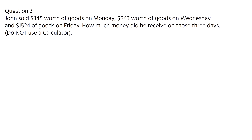Question 3. John sold $345 worth of goods on Monday, $843 worth of goods on Wednesday, and $1,524 worth of goods on Friday. How much money did he receive on those three days? Do not use a calculator. You are usually not allowed to use a calculator on GED math questions involving operations on whole numbers. This question is asking for the total amount of money, so you will have to add the three amounts.